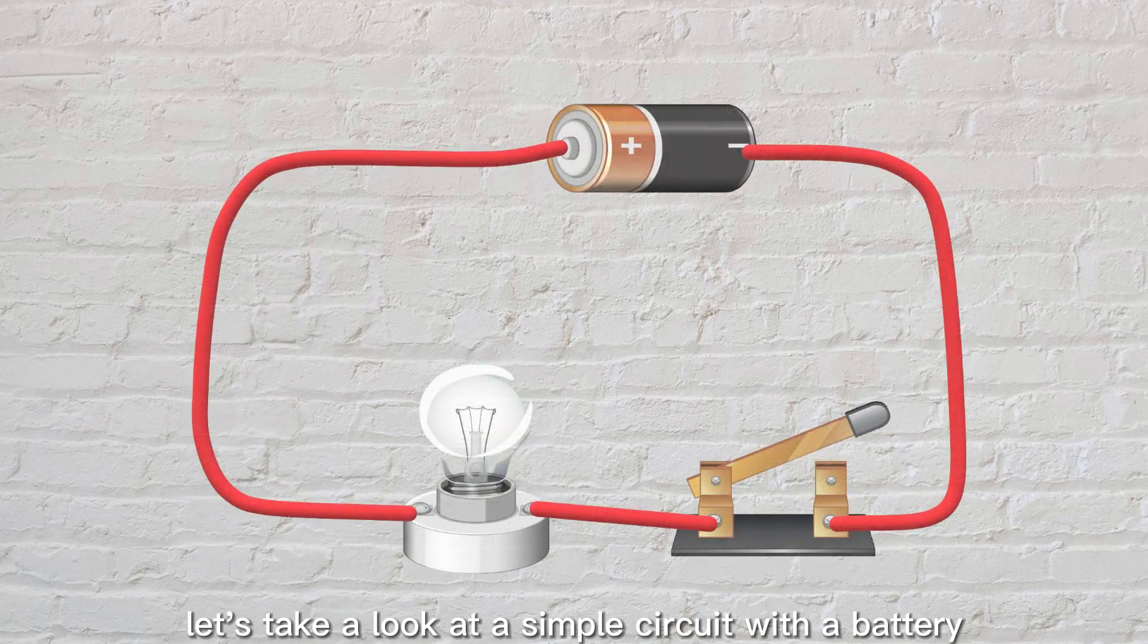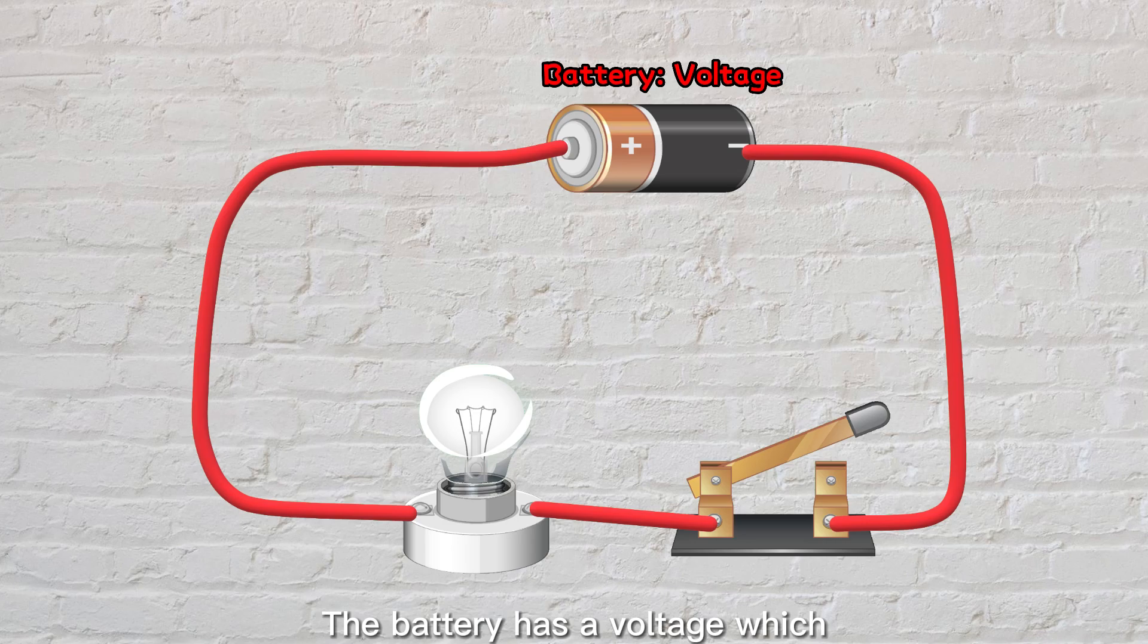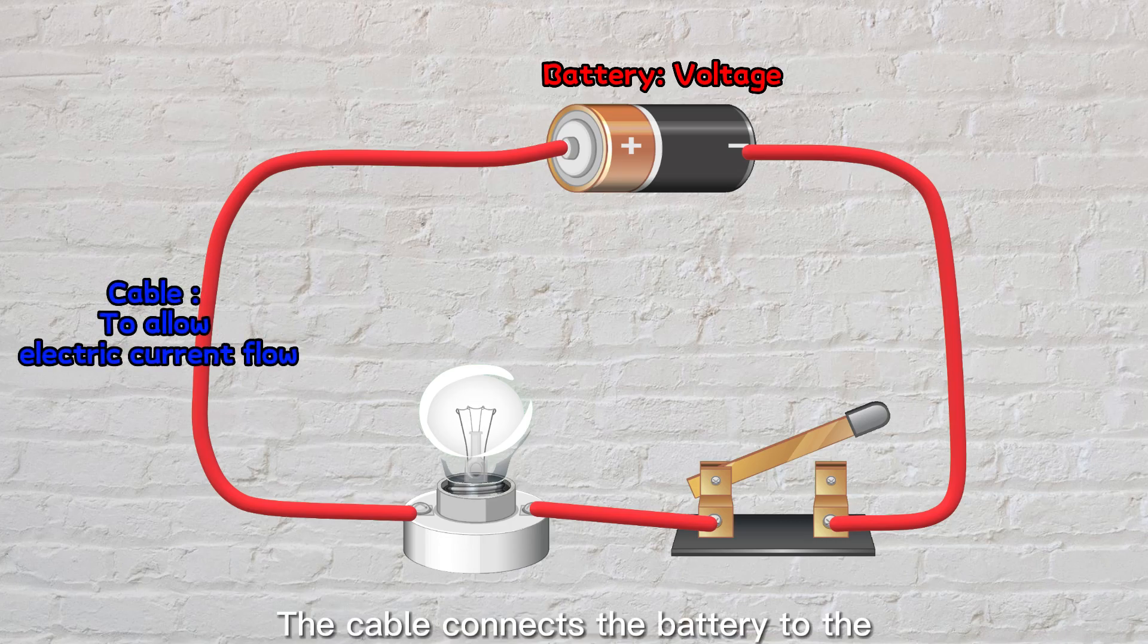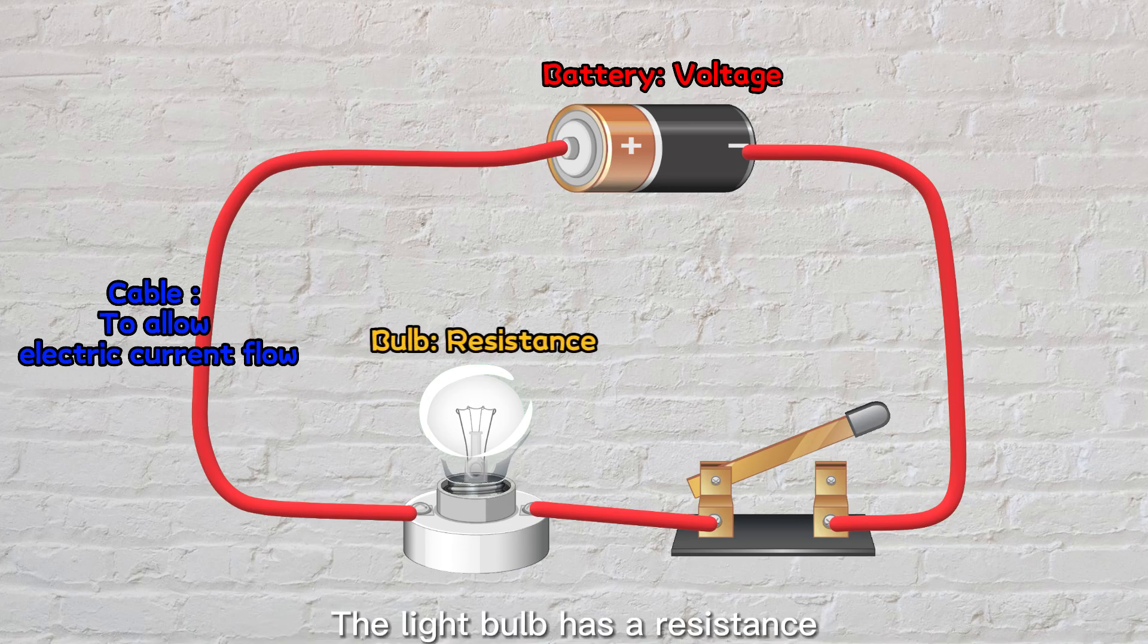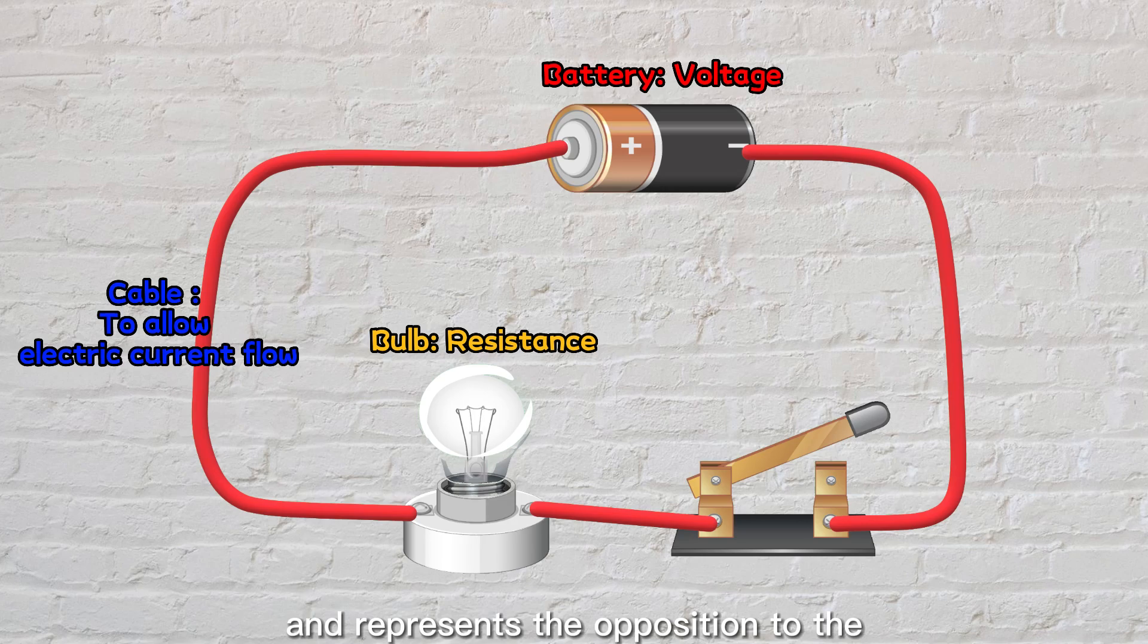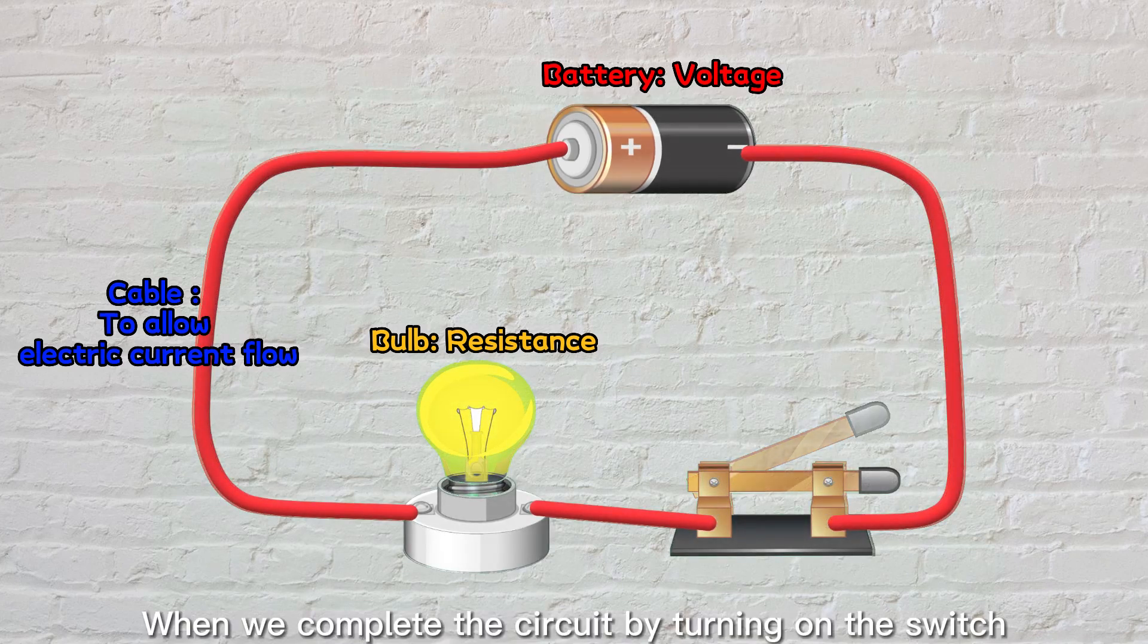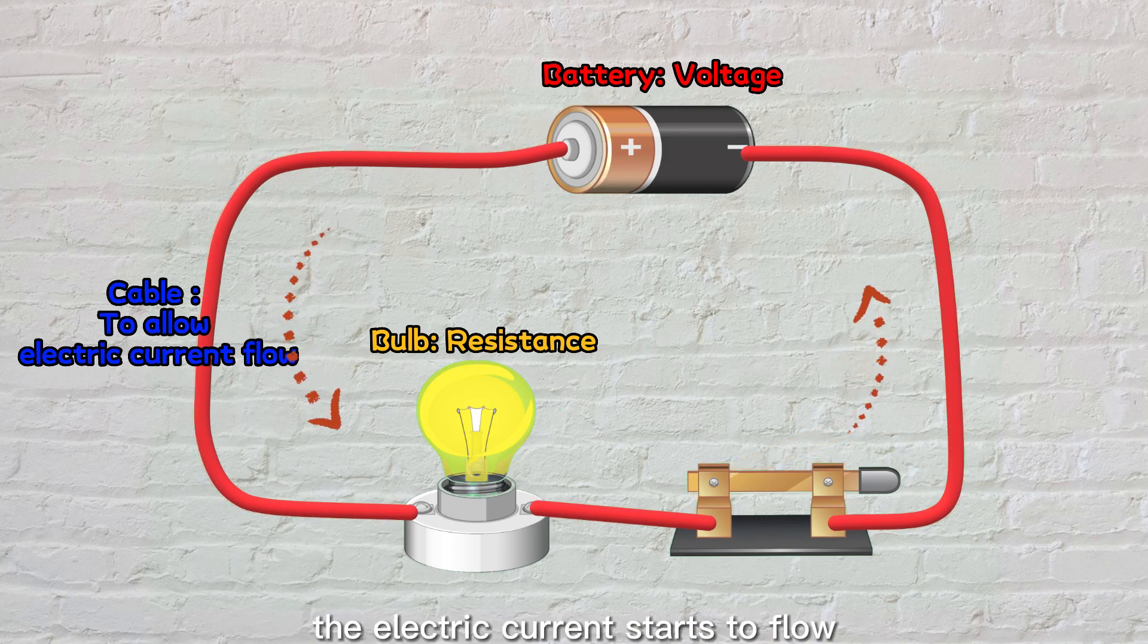To understand this concept, let's take a look at a simple circuit with a battery, a cable, and a light bulb. The battery has a voltage, which determines how much electrical energy it can provide to the circuit. The cable connects the battery to the bulb and allows the electric current to flow. The light bulb has a resistance, and represents the opposition to the flow of electric current. When we complete the circuit by turning on the switch, the electric current starts to flow.